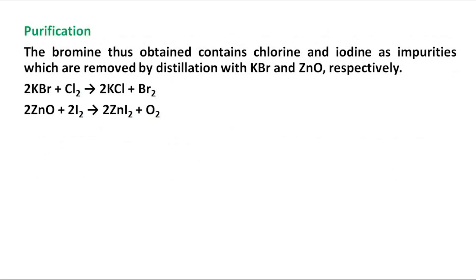Purification: The bromine thus obtained contains chlorine and iodine as impurities, which are removed by distillation with potassium bromide and zinc oxide, respectively.